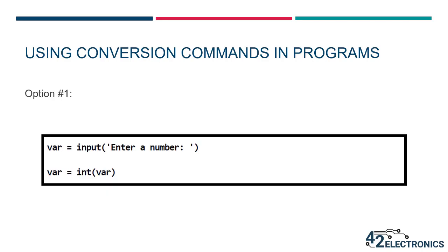This input string must be converted to an integer using the int() command. There are a couple of ways to accomplish this task. With option number one, the input from the user is initially saved to the variable var. Then the int command is used with var to take the integer value var and overwrite the string value of var with the integer value.